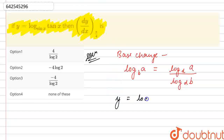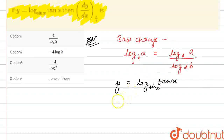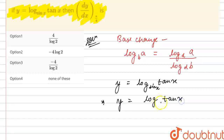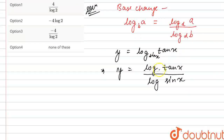We are given y equals log 10x with base sine x. Using the base change theorem, I'll write y as log of 10x divided by log of sine x, both with base 10. When no base is written, the base is 10. Now we can easily find dy/dx using the quotient rule of differentiation.